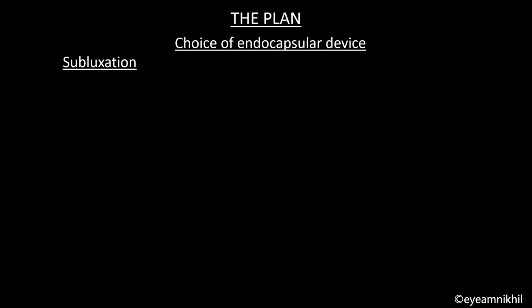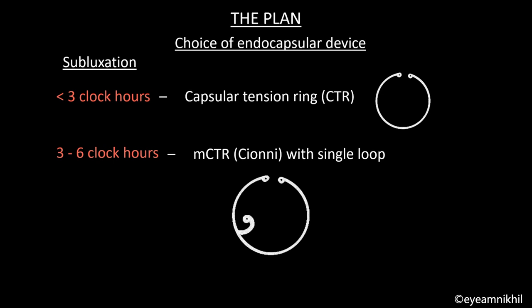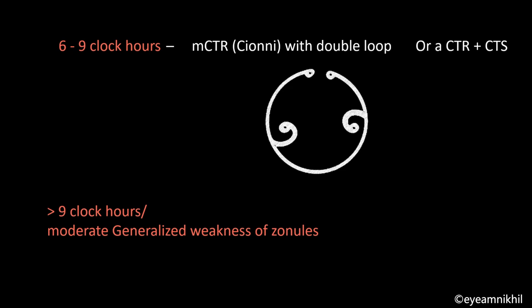Coming to the choice of endocapsular device: if subluxation is less than 3 o'clock hours, a CTR capsular tension ring can be used. In subluxation of 3 to 6 o'clock hours, a modified CTR or SIONI with a single loop can be used, or a capsular tension segment (CTS). In 6 to 9 o'clock hours, SIONI with double loop or a combination of CTS with CTR can be used. If subluxation is more than 9 o'clock hours, or in presence of moderate generalized weakness of zonules, an intracapsular cataract extraction with SFIOL or ACIOL may be needed.